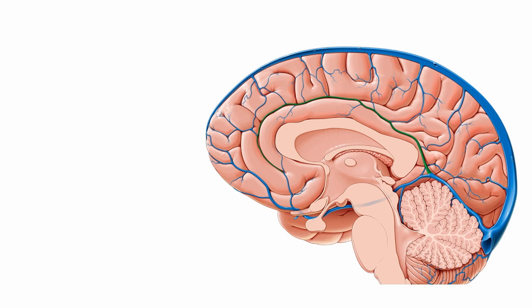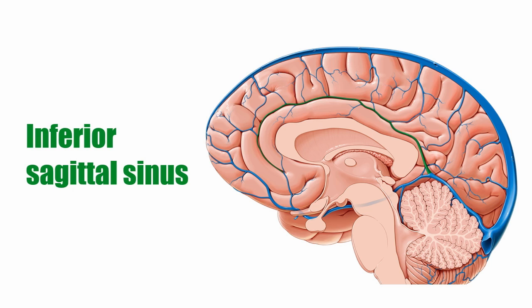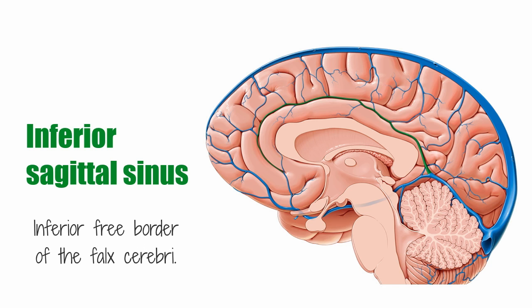There are two sagittal sinuses that occupy the longitudinal cerebral fissure in the midline between the cerebral hemispheres. The more superficial of the two is the superior sagittal sinus, and the other one is the inferior sagittal sinus, seen here highlighted in green. It lies deep to the superior sagittal sinus in the inferior free border of the falx cerebri, and just dorsal to the corpus callosum. This sinus is concave in shape and is much smaller than its counterpart, the superior sagittal sinus.